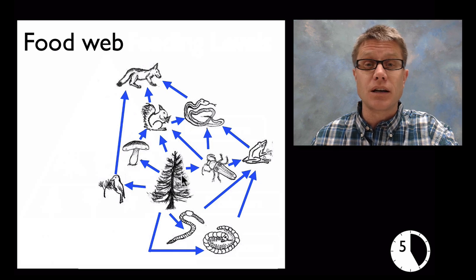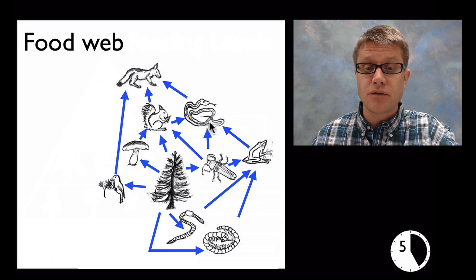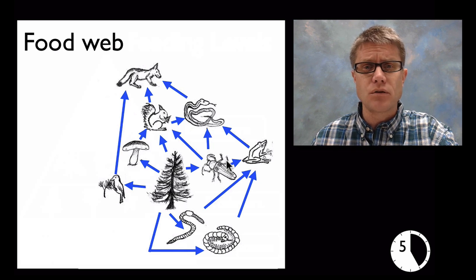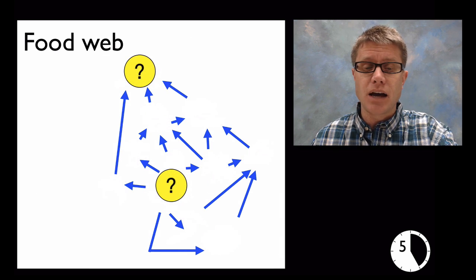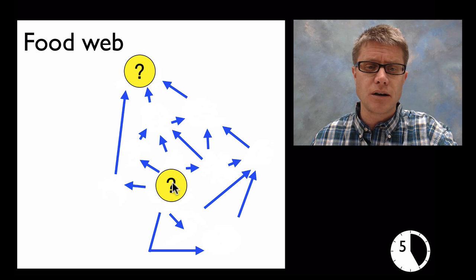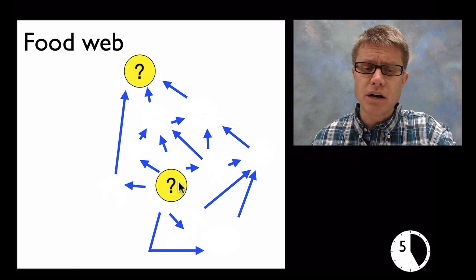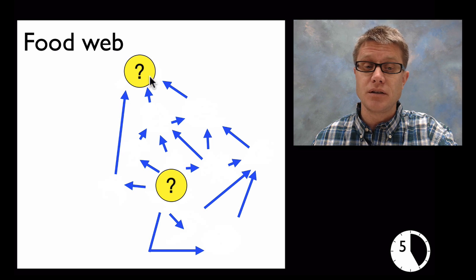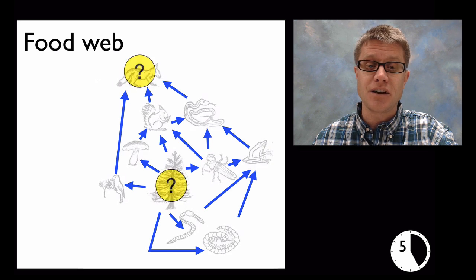For example, this beetle is feeding on a tree, but it's eaten by a frog, which is eaten by a snake, which is eaten by a coyote. It's important that students understand where the arrow is moving and what it represents — the movement of energy and matter. Since one organism has arrows moving out from it, we know it is a producer. Since the other only has arrows coming into it, we know it is a consumer — a tree and a coyote.